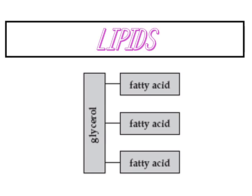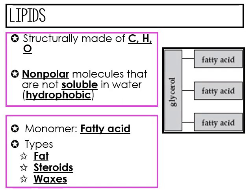Now we have reached our discussion on lipids. We're going to go into some details about different kinds of lipids, and I'll point out what is necessary for the assessment. Lipids are structurally made up of carbon, hydrogen, and oxygen, so they are organic. They are nonpolar molecules, which are not soluble in water — they are hydrophobic. Hydro means water, phobic means fearing. Monomers are fatty acids. We have three types: fats, steroids, and waxes.